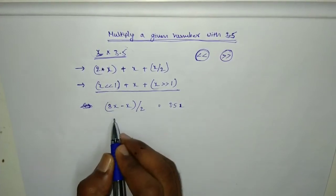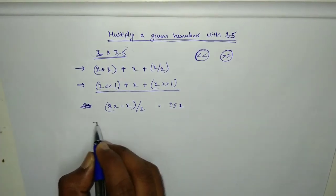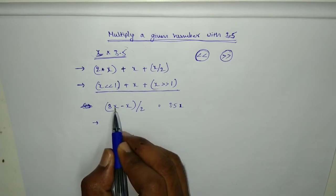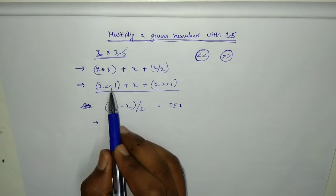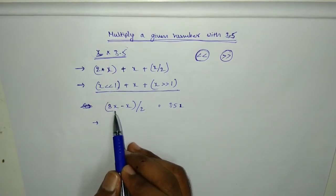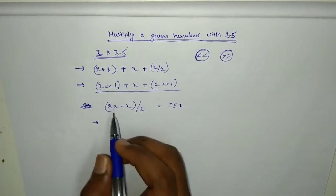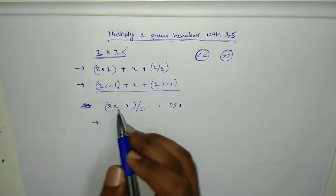Into left shift and right shift form. In the previous equation it is 2x, that's why we have done left shift once. But this is 8x, so we need to do left shift thrice. If you do once it will be double.